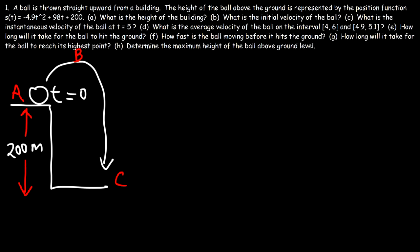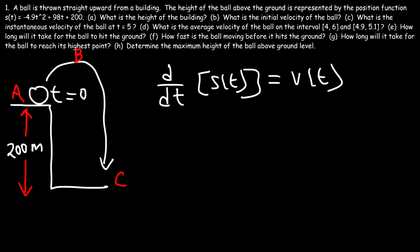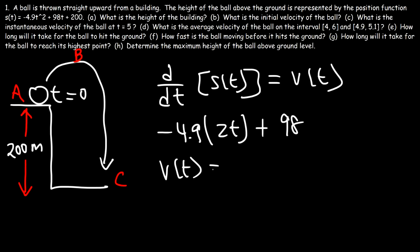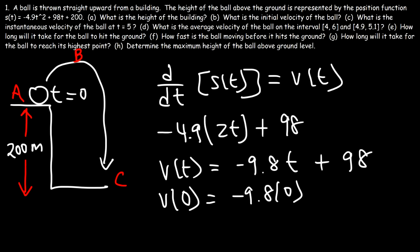Let's move on to part B: what is the initial velocity of the ball? To find the initial velocity, we need to find the derivative of the position function. The derivative of S(t) gives us the velocity function. The derivative of negative 4.9t squared is negative 9.8t, and the derivative of 98t is just 98. So V(t) equals negative 9.8t plus 98. To calculate the initial velocity, we replace T with zero: zero plus 98. So V(0) is 98 — that's the initial velocity in the Y direction.